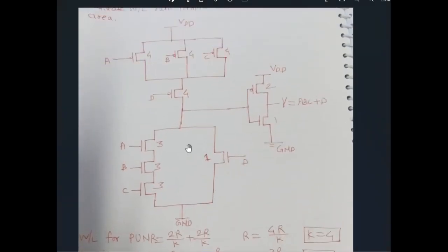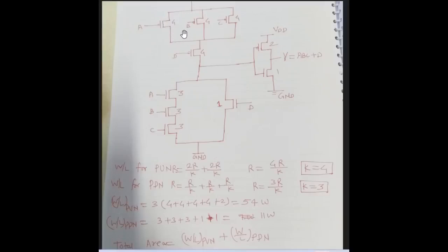Returning to the numerical: for the pull-up network, from VDD to output there are multiple paths — AD, BD, and CD. Each path contains two MOSFETs, so we choose any, such as path A and D with two MOSFETs. Finding the W by L for the pull-up network: R equals 2R/K plus 2R/K. Solving this gives W by L for P-MOSFETs equal to 4.